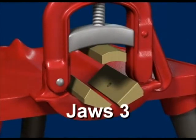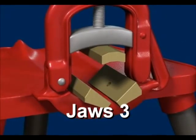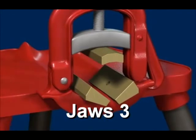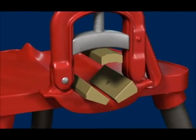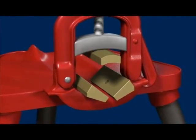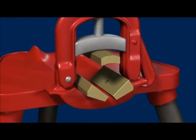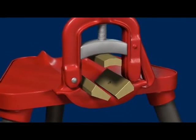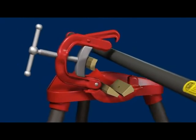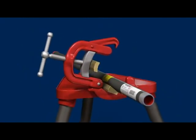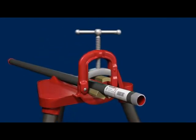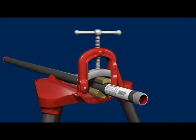Jaws 3 is a set of three aluminum nickel bronze vise jaws designed to replace the regular jaws in a pipe vise. Jaws 3 protects PlastiBond coated conduit from damage during cutting and threading. These replacement jaws spread the clamping force over a much larger area, greatly reducing the possibility of the pipe spinning in the vise during cutting and threading operations. One set of Jaws 3 handles one-half through one and one-half inch conduit.